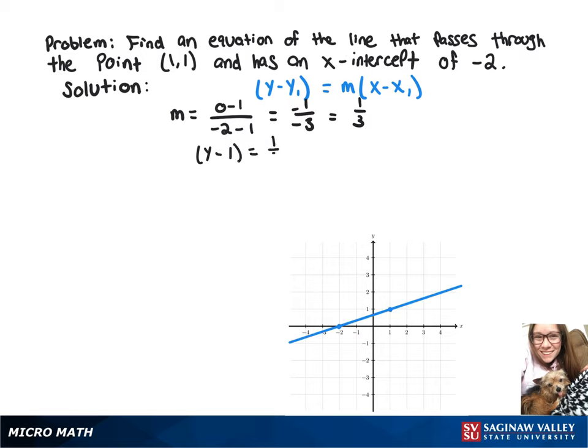1 equals 1 third times x minus 1. Now we can distribute the 1 third, leaving us with y minus 1 equals 1 third x minus 1 third.